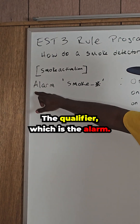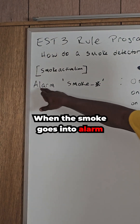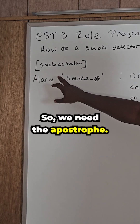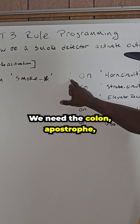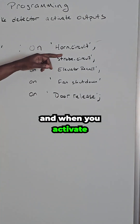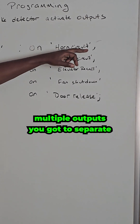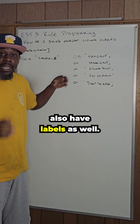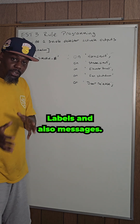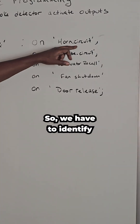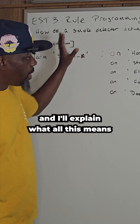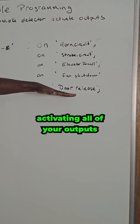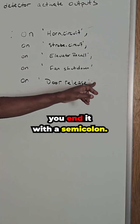The qualifier is the alarm. When the smoke goes into alarm, we want these output actions to activate. So we need the apostrophe, we need the colon, apostrophe. When you activate multiple outputs, you have to separate them with commas. The output circuits also have labels and messages, so we have to identify whatever the label is.